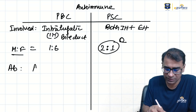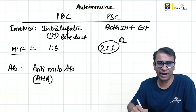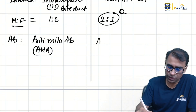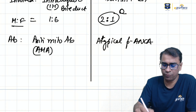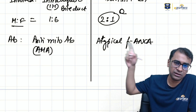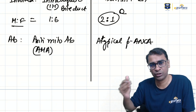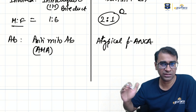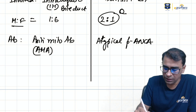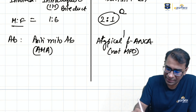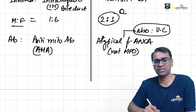The antibody in PBC is the anti-mitochondrial antibody, known as AMA. In PSC, the antibody is an atypical variety of p-ANCA (perinuclear ANCA). It is called atypical because regular p-ANCA is directed against MPO (myeloperoxidase), whereas atypical p-ANCA is against unknown antigens. Atypical p-ANCA is also seen in ulcerative colitis.